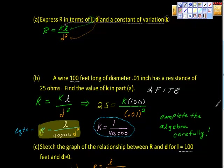The second part of the problem says a wire 100 feet long of diameter 0.01 inch has a resistance of 25 ohms. Find the value of K in part A. So they're telling us to take part A, this part up here, bring it down, which is what we did, and then it's telling us to fill in the blanks.